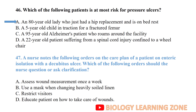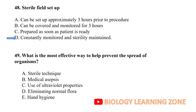An Alzheimer's patient's immune system is weak compared to a healthy host. A nurse notes the following orders on the care plan of a patient on enteric isolation with a decubitus ulcer. Which of the following orders should the nurse question? Sterile field setup constantly monitored and sterility maintained — the nurse should question this order.